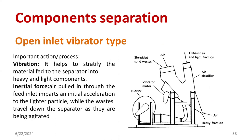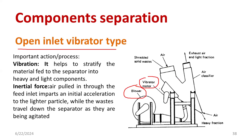The third one is open inlet vibrated type. Whenever you create a vibration — vibration is something like a pressure or a force — the material will be sorted out at the bottom side. First of all we require a fan, also called a blower. Then there is a vibrator motor which will operate continuously.